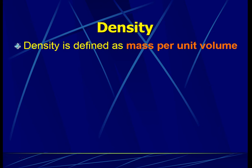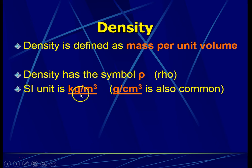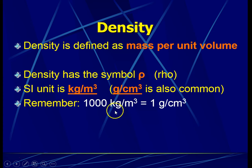Density is defined as mass per unit volume of a substance. It has the symbol rho. The SI unit for density is the kilogram per meter cube. Another common unit used for density is the gram per cm cube. Do take note that 1,000 kilogram per meter cube is equal to 1 gram per cm cube.